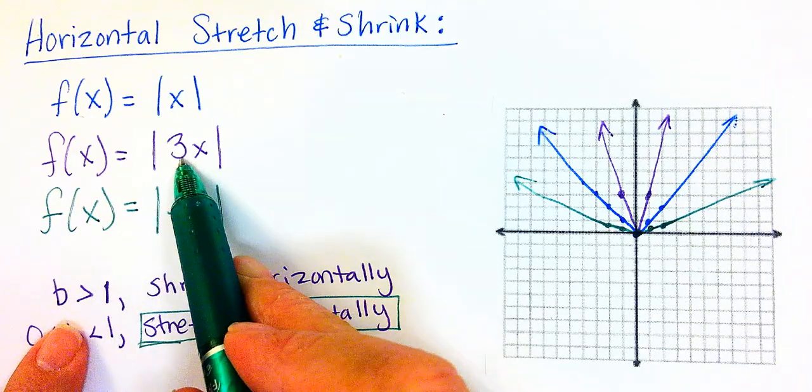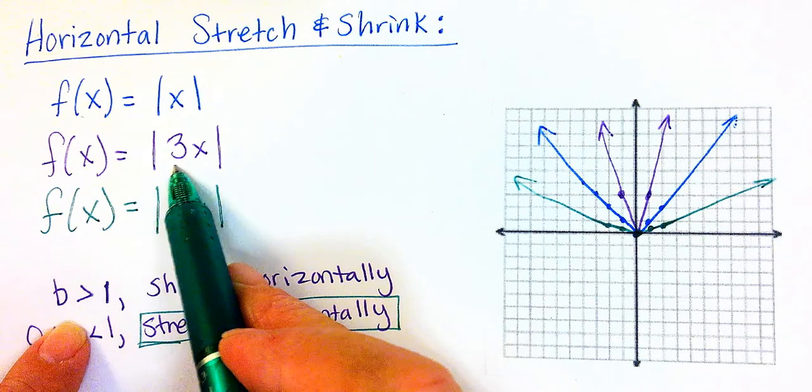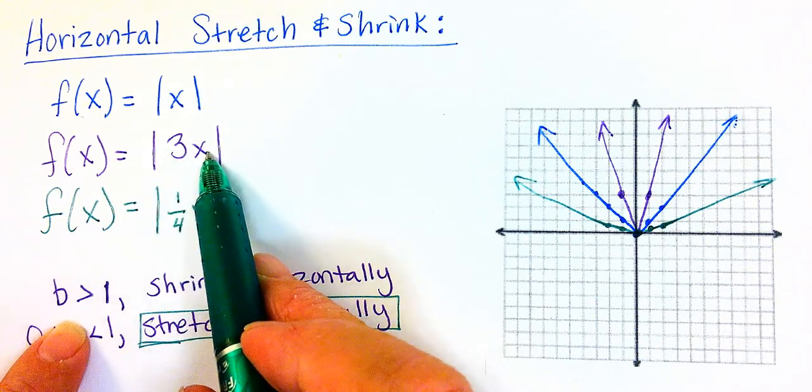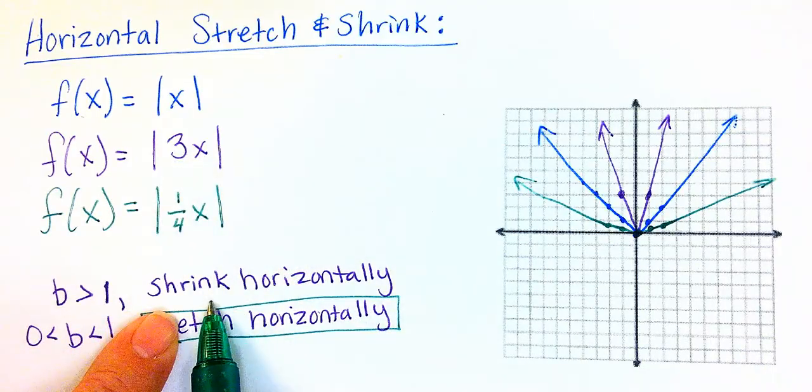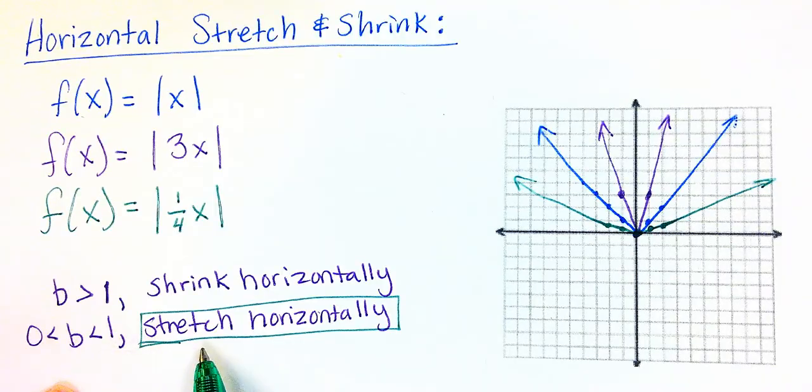So again, if this number, we're going to call it b here, but if this number in front of the x inside the function is greater than 1, it's going to shrink horizontally. If it's in between 0 and 1, it's going to stretch horizontally. Now, I want to make a point here.